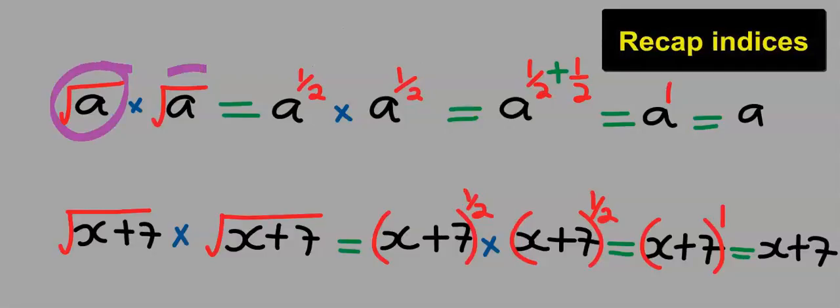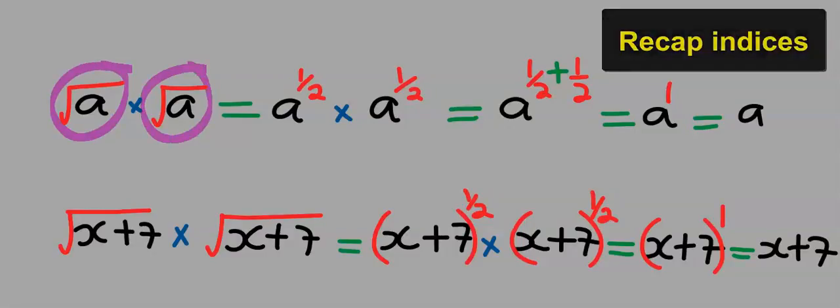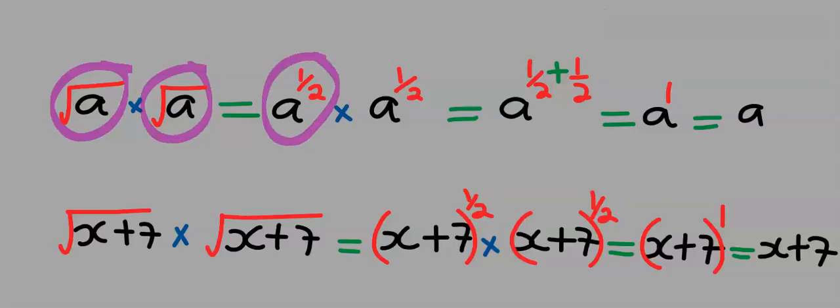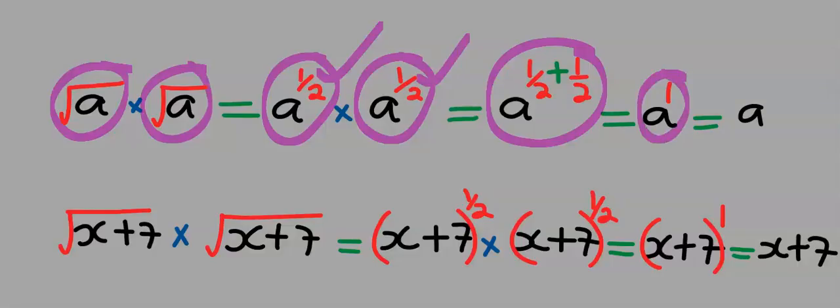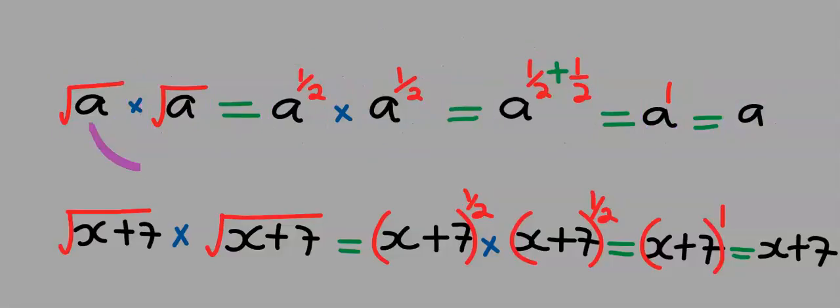Square root of a multiply square root of a is the same as a to the power of half multiply a to the power of half, which is the same as a to the power of one half plus one half. And one over two plus one over two is one, which is the same as a. You can see because these two a's are the same, it's going to return just one of it, considering the square roots that both of them have.